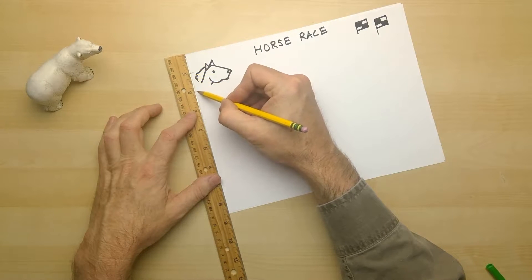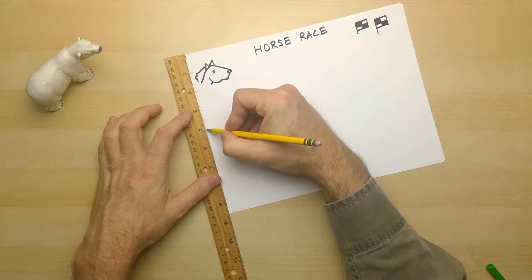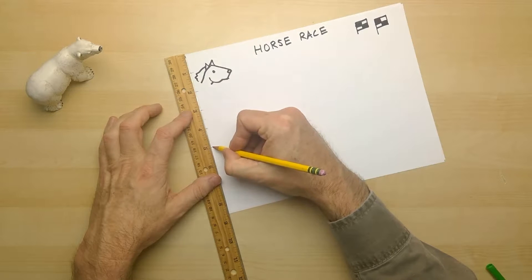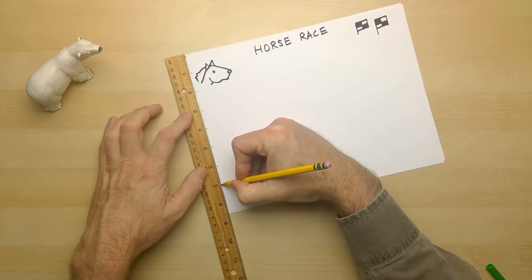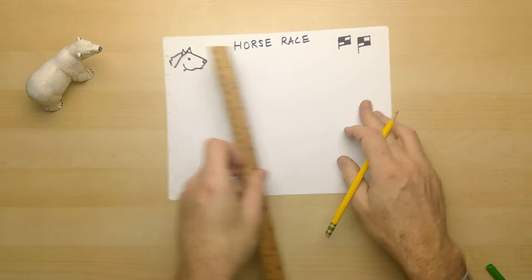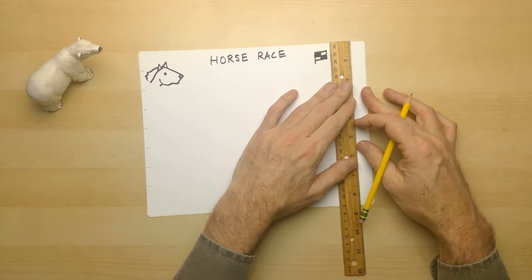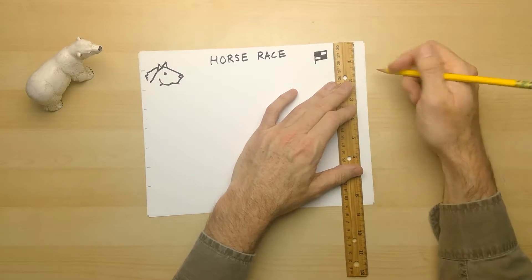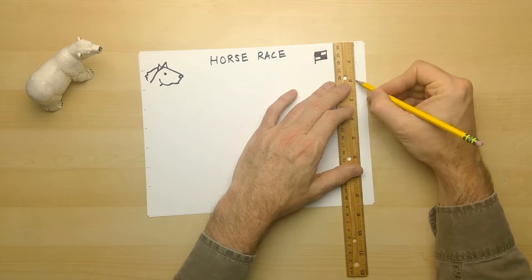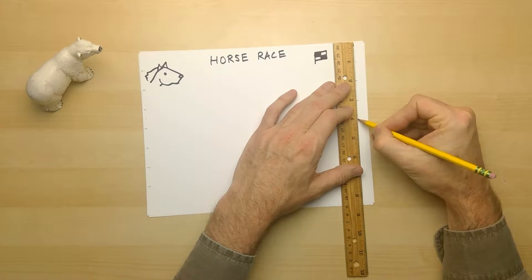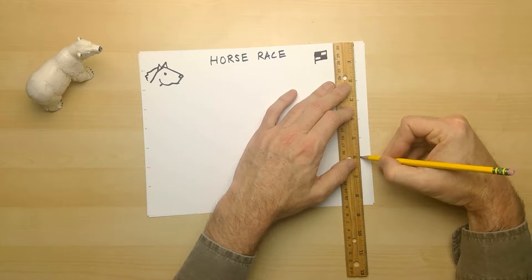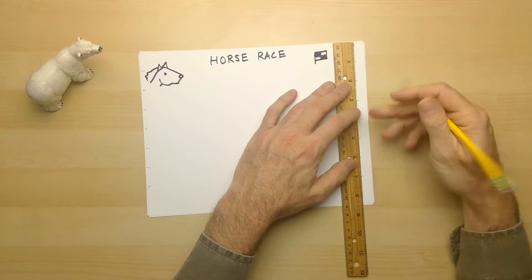One, two, three, four, five, six, seven. And on this side, the same thing. One, two, three, four, five, six, seven.